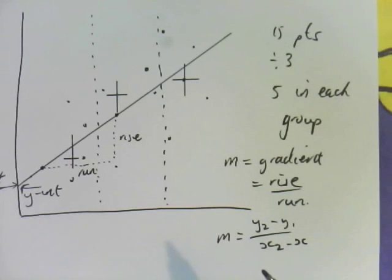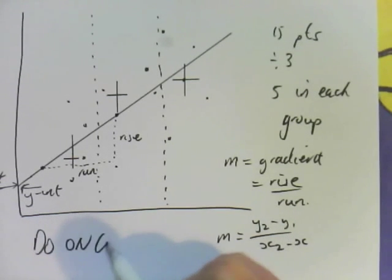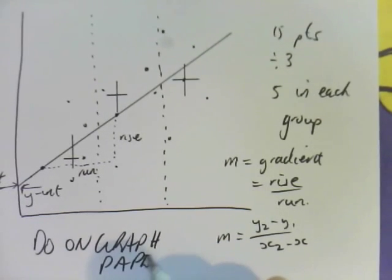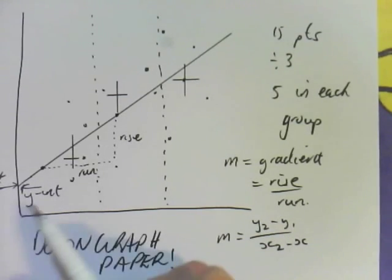So if you are going to do a three median regression line graphically, you must do it on graph paper. And I'll write it in big capital letters. You must do it on graph paper so that you can read off the y-intercept, find your two points, and calculate your gradient.